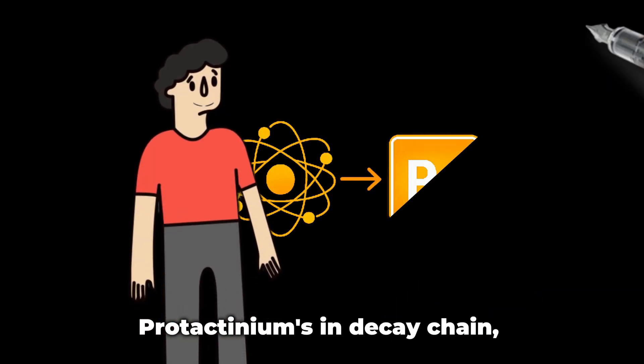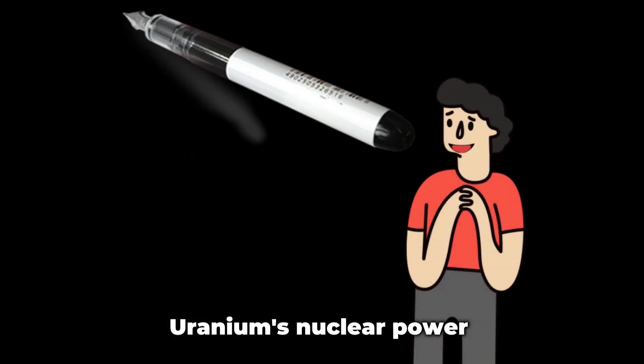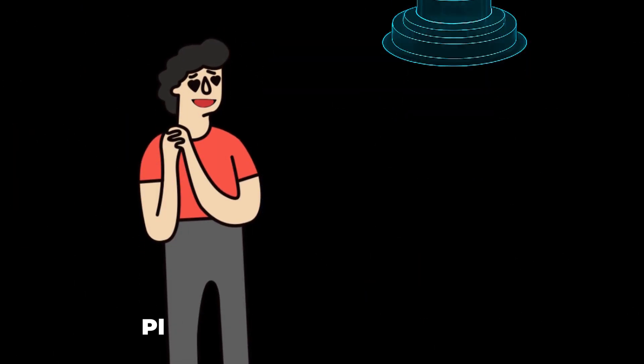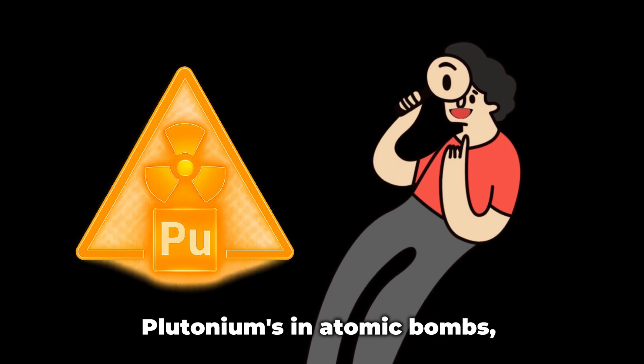Thorium can power reactors. Protactinium's in decay chains. Uranium's nuclear power. Neptunium was man-made first. Plutonium's in atomic bombs.